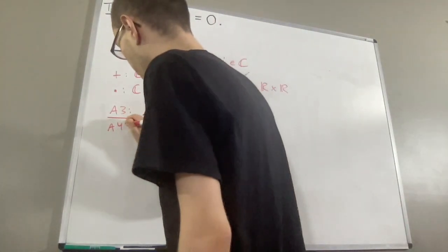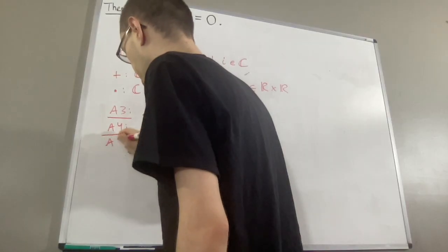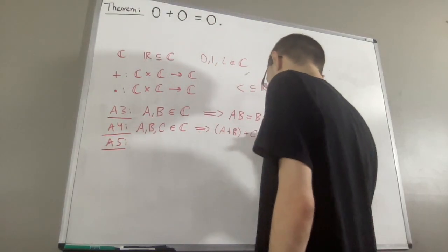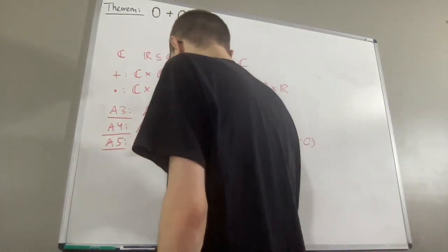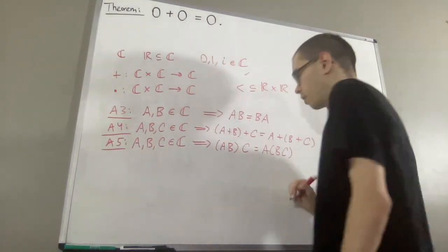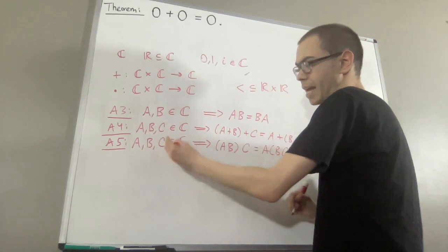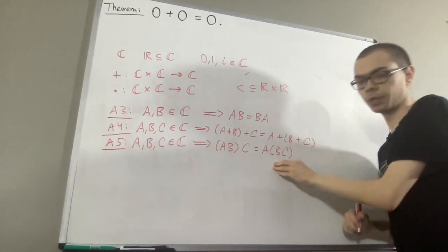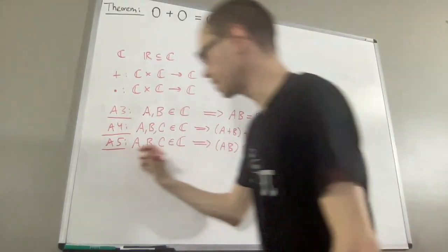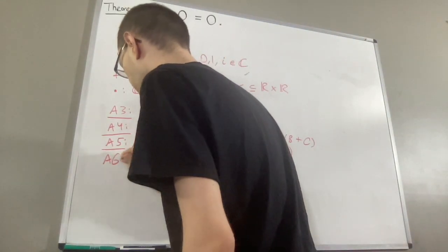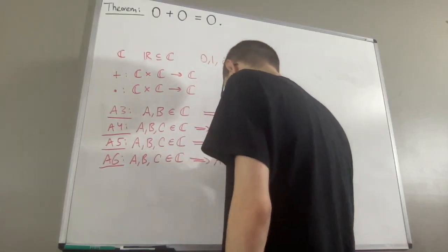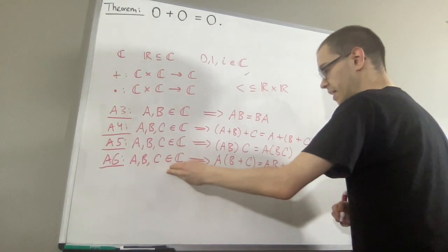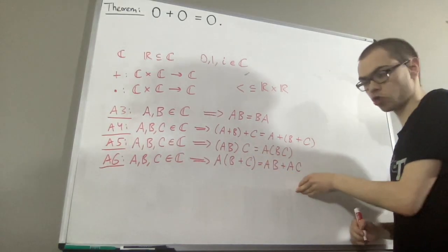Axioms four and five are the associative laws of addition and multiplication. Given any three complex numbers a, b, and c, these equalities hold. Axiom six is the distributive law: given any three complex numbers a, b, and c, this equality is true.